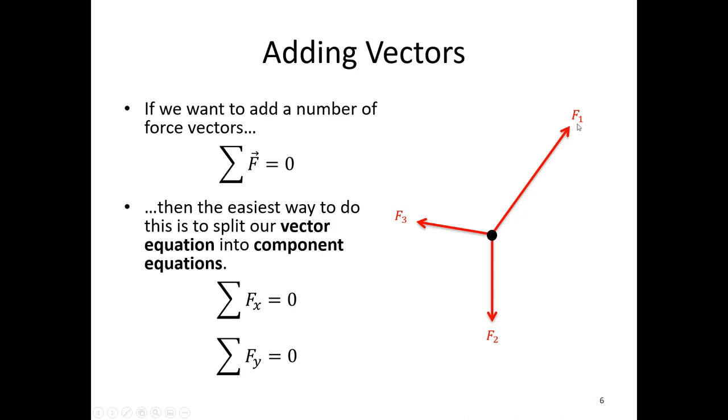If I find the x component of F1, x component of F2, x component of F3, those three components should wind up being equal to zero if the body is in equilibrium.